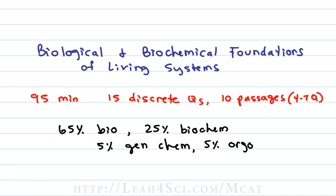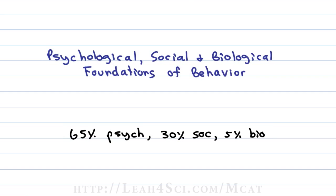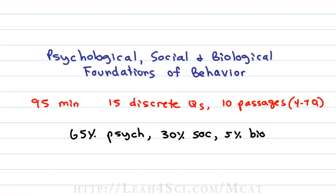The final section is the Psychological, Social, and Biological Foundations of Behavior, covering 65% psychology, 30% sociology, and 5% biology. As with the other science sections, you have 95 minutes to work through 15 discrete questions and 10 passages with 4 to 7 questions each.